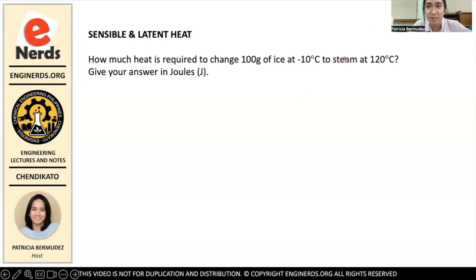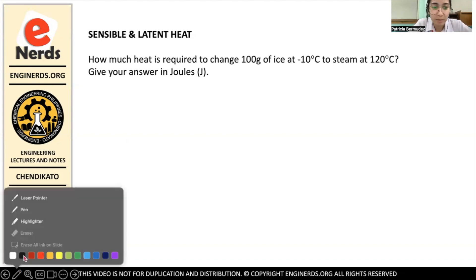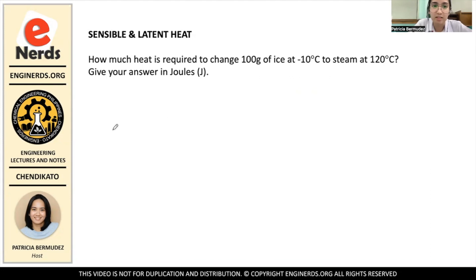Hi guys. Welcome back to Engineerd's YouTube channel. I'm Patricia Bermudez, and I will be your host for today's video. For today's video, we will be discussing two types of heat: sensible heat and latent heat. The question asks: how much heat is required to change 100 grams of ice at negative 10 degrees Celsius to steam at 120 degrees Celsius? Give your answer in joules.